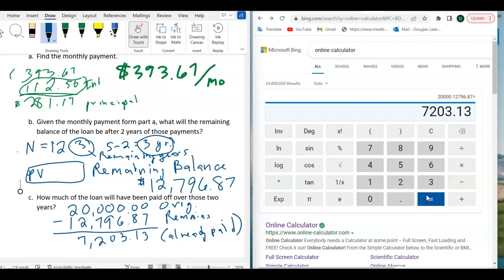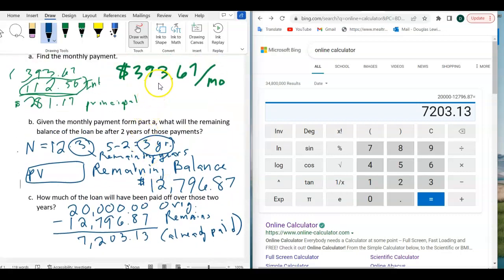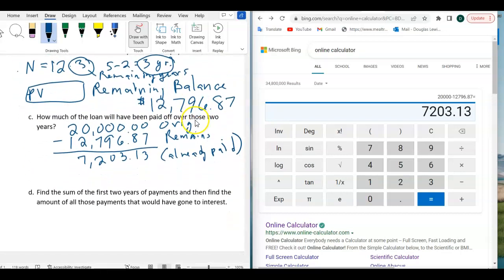Now, the next question I hope is obvious. If this is, if $7,203.13 is what went towards the principal, remember, you've been paying $393.67 a month for two years. What happened to all that money? Well, again, that's $393.67.